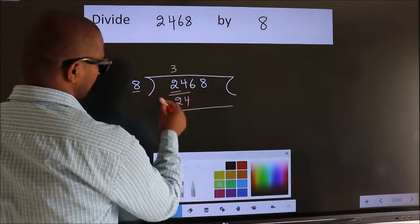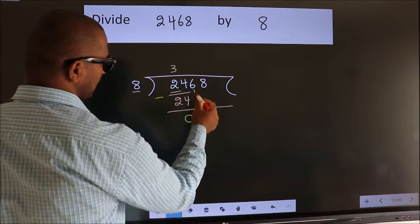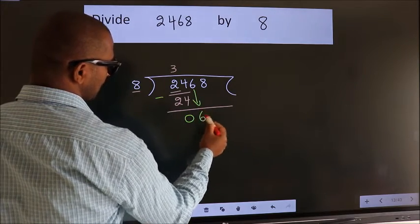Now, we should subtract. We get 0. After this, bring down the beside number. So, 6 down.